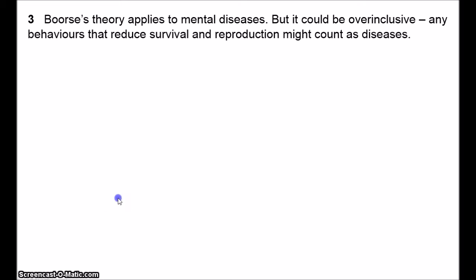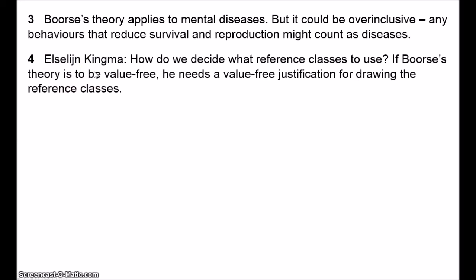Perhaps the most serious problem for Boorse was raised by Elselijn Kingma. This is Boorse's appeal to reference classes. We can only specify what counts as normal functioning relative to a reference class, given in terms of age, sex, and race. But how exactly do we decide which reference classes to choose? Suppose Frank is an alcoholic and has damaged his liver — that's clearly a disease. But if we take as our reference class other alcoholics, then Frank's liver condition may well be perfectly within the normal range.